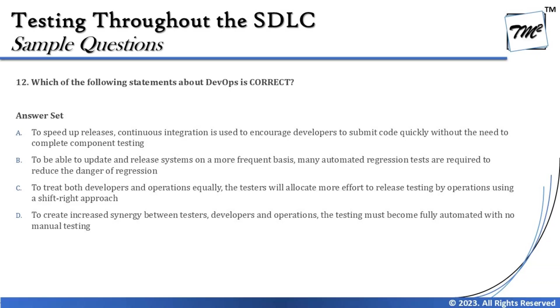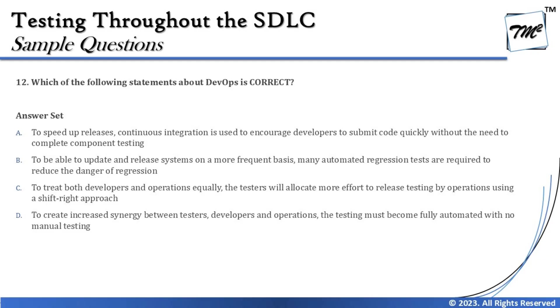Option B says: to be able to update and release systems on a more frequent basis, many automated regression tests are required to reduce the danger of regression. By having DevOps fully automated, we reduce the risk of regression every single time the code is checked in by a developer, encouraging developers to include high quality code.